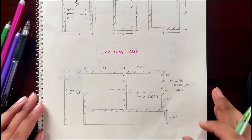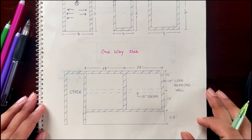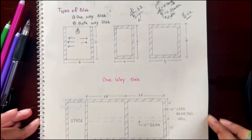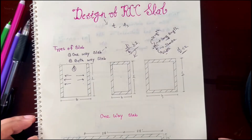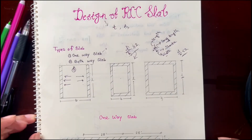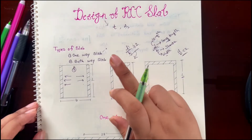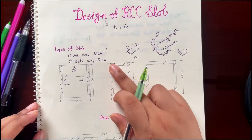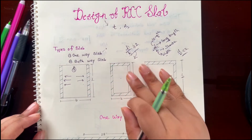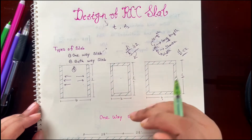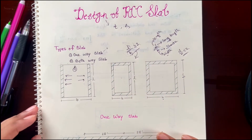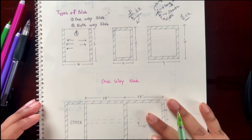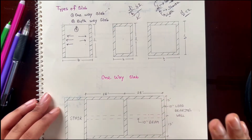In the previous tutorial, we learned how to identify a slab — whether it is a one-way slab or a two-way slab. We have learned to identify that. Now we will learn the design of a one-way slab.